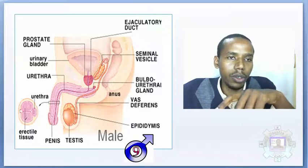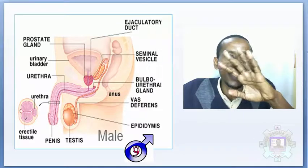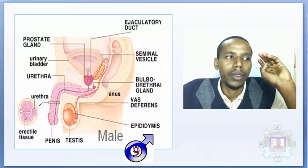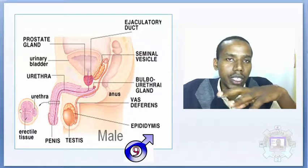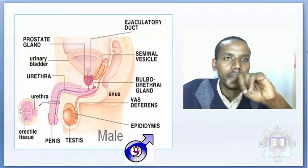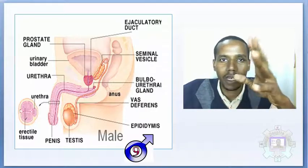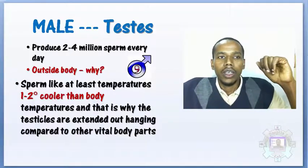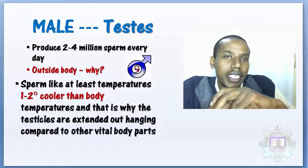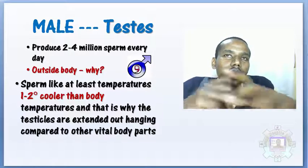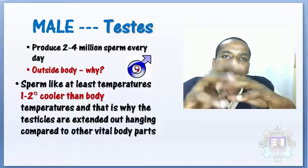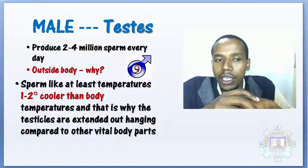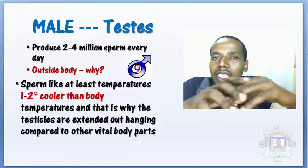This class will talk more about the male reproductive system structure, the sperm, and its function. It is a brief and straightforward class. Males have testicles, and the testes produce two to three to four million sperm per day.